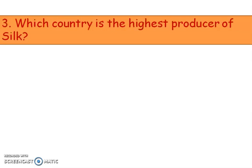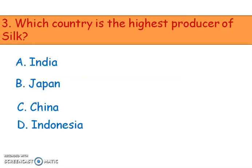Next question: which country is the highest producer of silk? Options are India, Japan, China, and Indonesia. The right answer is option C, China.